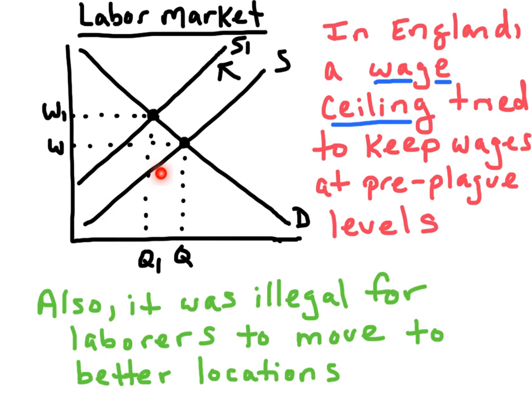So when the supply of labor shifts to the left, that leads to higher wages — those are the higher resource costs we just mentioned. The English government knew that wages were rising; however, the government wanted to keep wages low and keep prices low to deal with the inflation. So what England did is it established a wage ceiling — a legal maximum that the workers could earn — and they set it at the pre-plague levels.